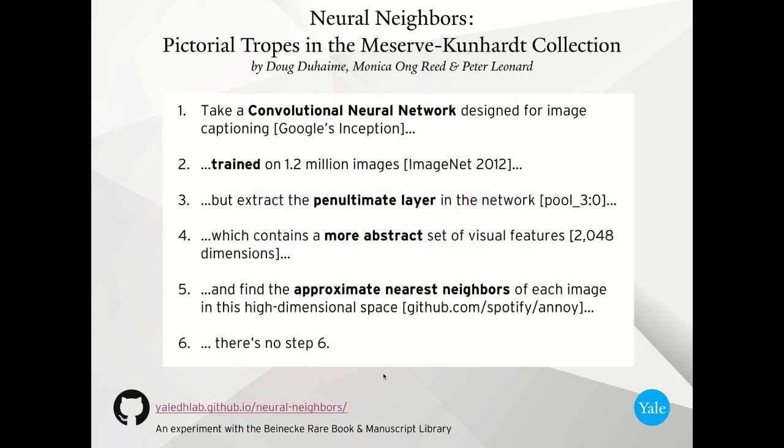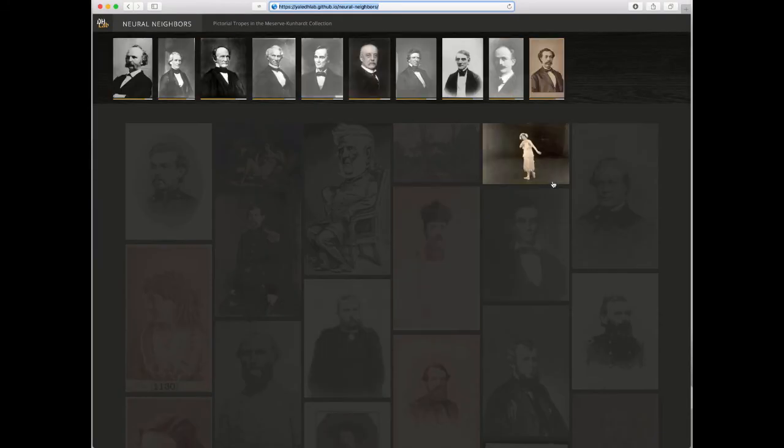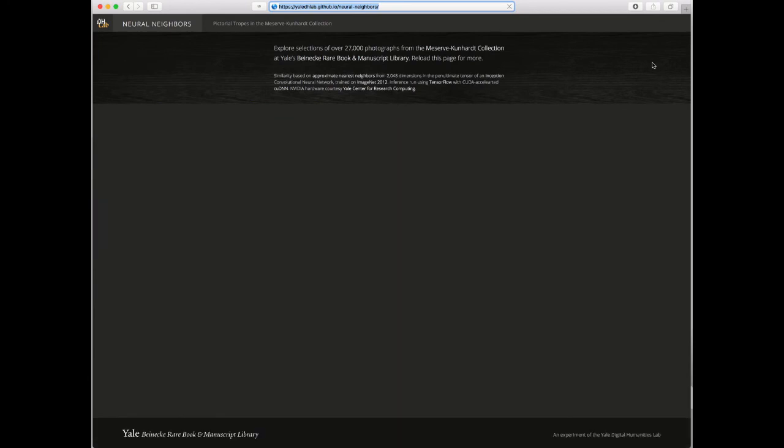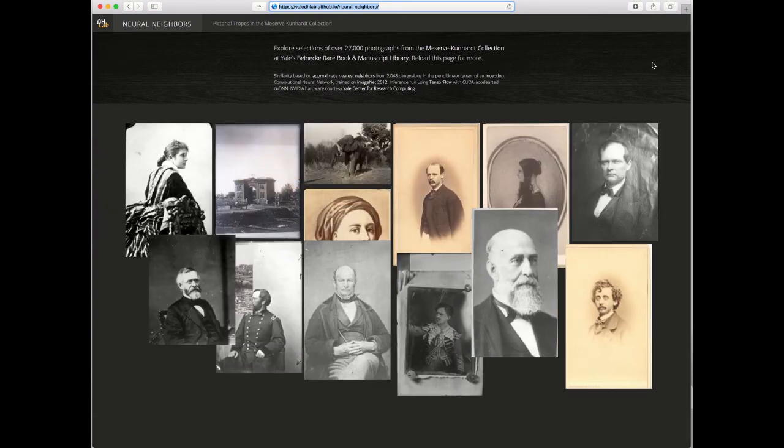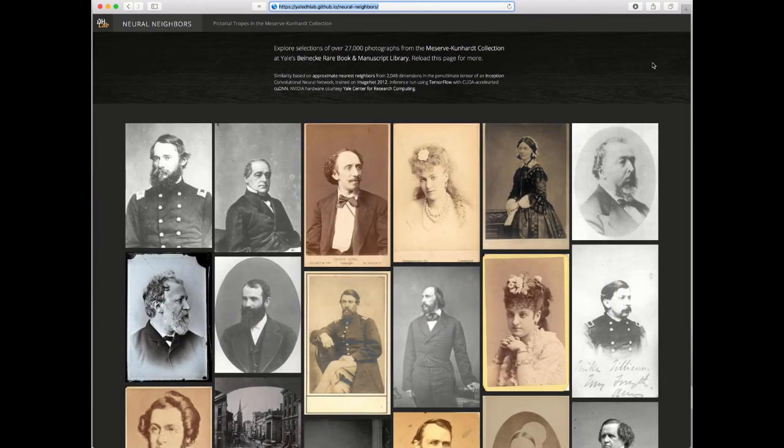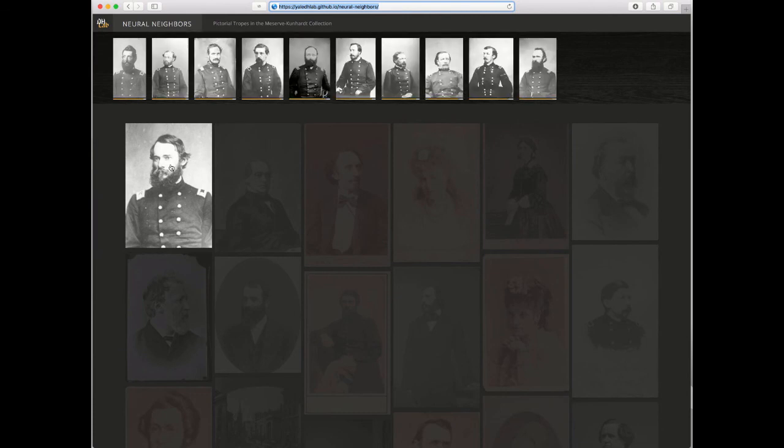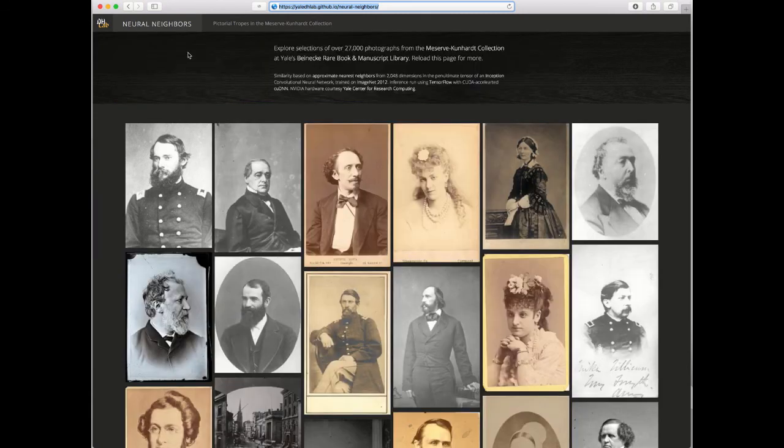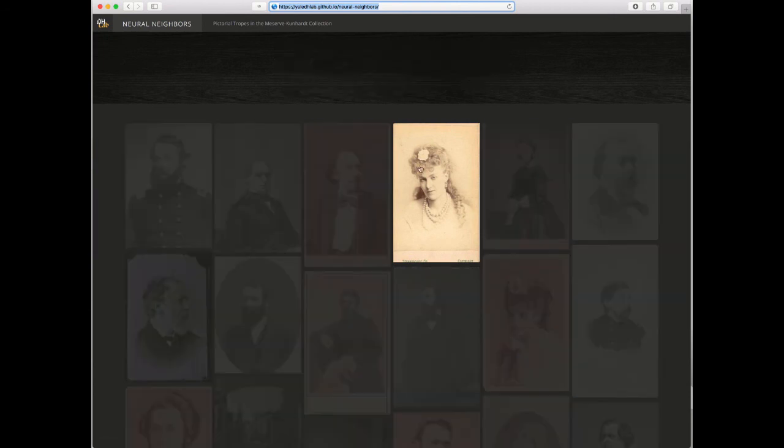What I'd like to do now is to show you exactly how this works. So what we have on the screen now are just random images from the Meserve Kuhnhart collection. There actually isn't anything important about each image. It's just that they're each from this large collection of tens of thousands of images. The important part comes when I move my mouse over this particular image here on the top left. And you'll see that as I move my mouse over that, I see other images which are visually similar.